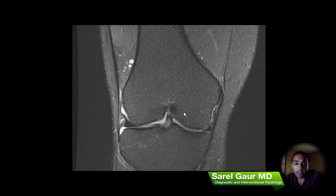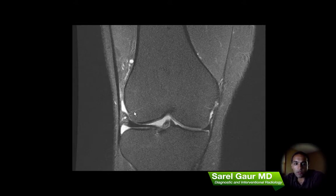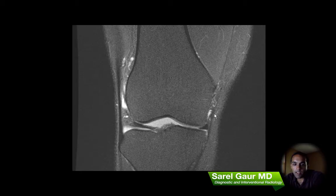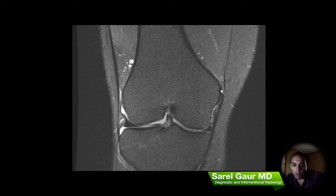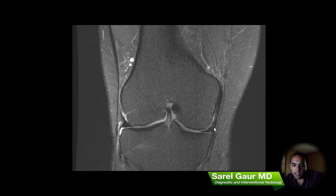Next on the checklist are the medial and lateral supporting structures. I'm now looking at a coronal view of the knee — this is a T2 weighted fat suppressed image. Here I can find the MCL as this dark black structure, and it's inserting onto the tibia inferior to the joint line. I want to point out how intimately it's related to the meniscus here. This is all normal — there's no fluid cutting into the ligament — so the MCL is intact.